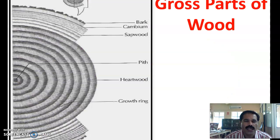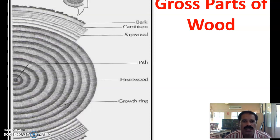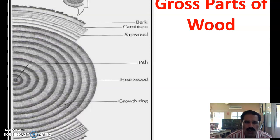The gross features of wood are shown in these pictures. The outermost part of the wood is the bark, which consists of dead cells. After the bark, the cambium layer is present, identified between the sapwood and the bark. The sapwood is a whitish-yellowish portion having living cells. Then after the sapwood, the heartwood portion is available — brownish, darkish in color, having dead cells. The central portion of the wood on the cross section is known as the pith. The circular growth rings are available on the cross section — one ring for one year — so we can identify the age of the trees with the help of these growth rings.